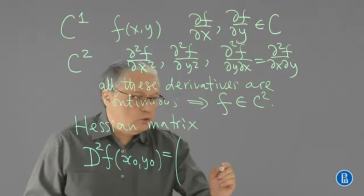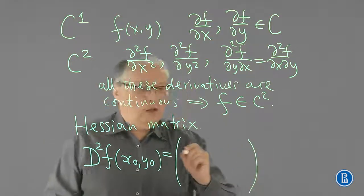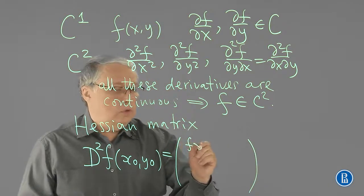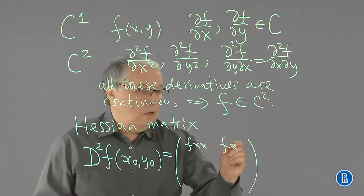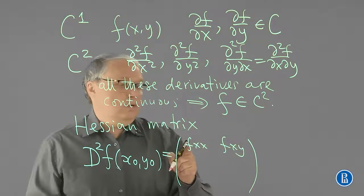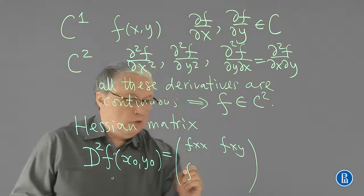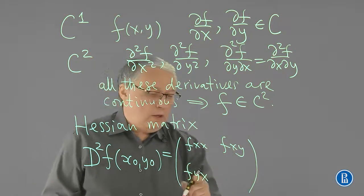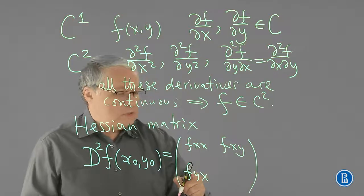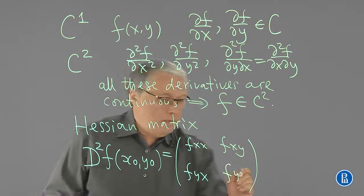And this is a two-by-two matrix. The first row includes this derivative, and this is a cross-derivative. Here we write y, y, x, reverse order, f, y, y.